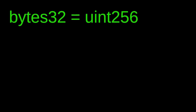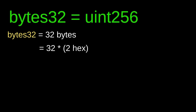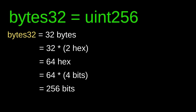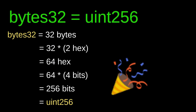Lastly, I'll show how the two data types bytes32 and uint256 relate to each other. bytes32 represents a data type of size 32 bytes. A single byte can be written using two hexadecimal values, so 32 bytes can be represented using 32 times 2, or 64 hexadecimal values. Each hex can be represented using 4 bits, so 64 hex values can be represented in 64 times 4 bits, which is 256 bits. A sequence of 256 bits can be converted to uint256. That is how bytes32 maps onto uint256, and vice versa.